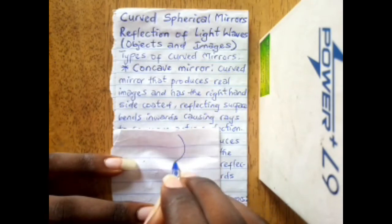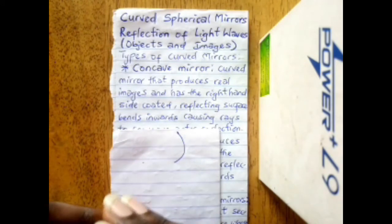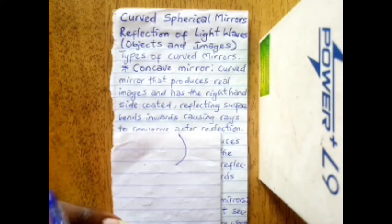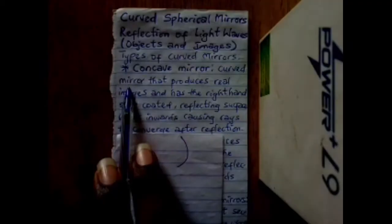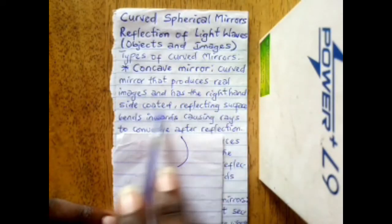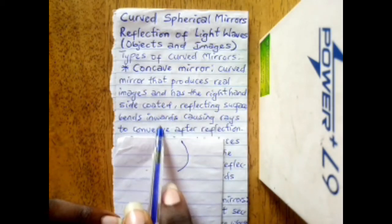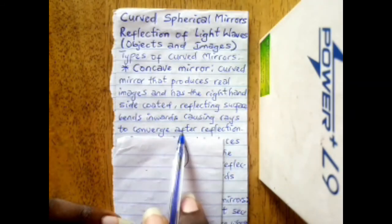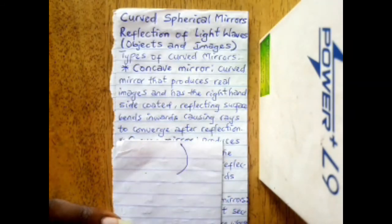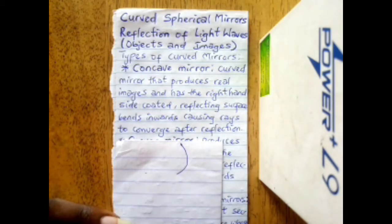First we'll talk about the concave mirror. Like the name implies, concave refers to an inward area of space. A concave mirror is a curved mirror that produces real images and has the right-hand side coated. The reflecting surface bends inwards, causing rays to converge after reflection.